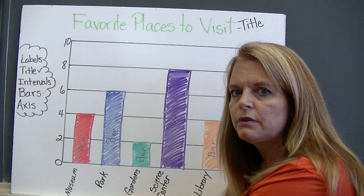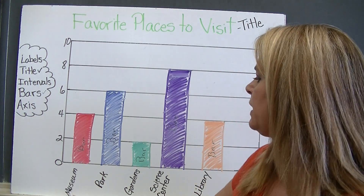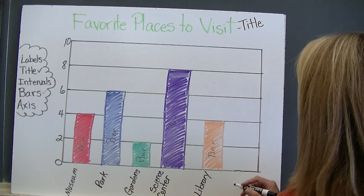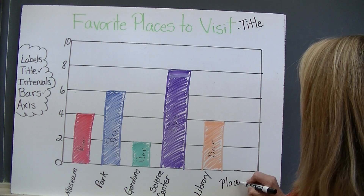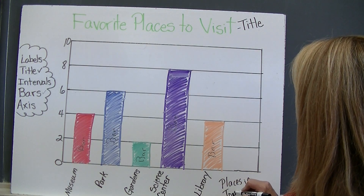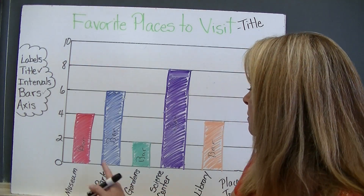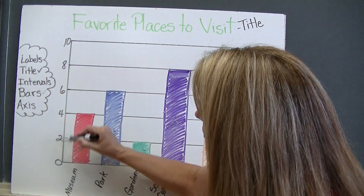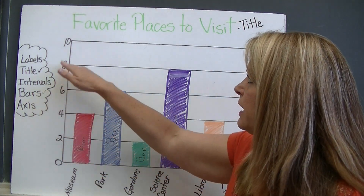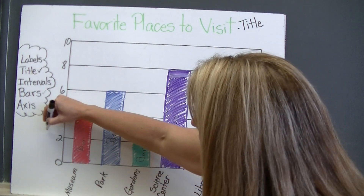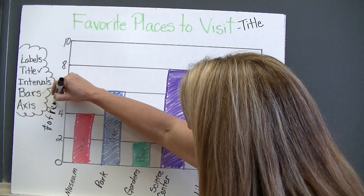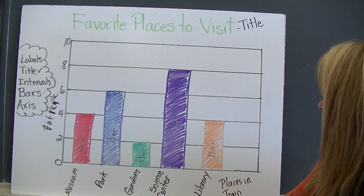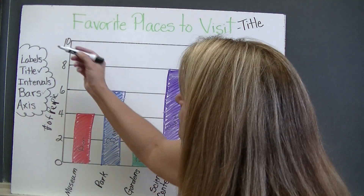What is missing on this axis? A label. We need to put a label down here. Museum, park, gardens, science center, library — we could call this "Places in Town." So my label will be down here: "Places in Town." Then I also need to label the vertical axis. What do you think these numbers stand for — zero, two, four, six, eight, ten? That's simply the number of people. So I label it "Number of People" — that's how many people answered each option. Now both axes have labels.